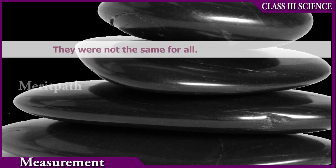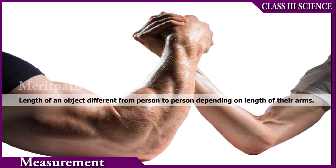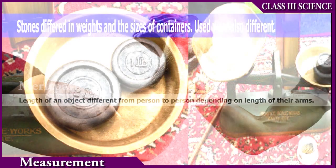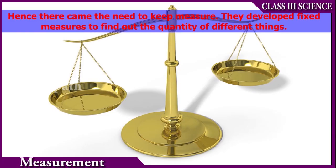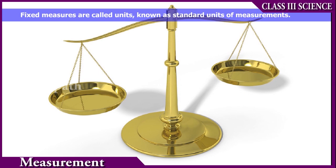These were not the same for all. The length of an object differed from person to person depending on the length of the arms. Stones also differed in weights, and the sizes of containers varied. Hence there came the need to measure. They developed fixed measures to find out the quantity of different things. Fixed measures are called units, also called standard units of measurement.